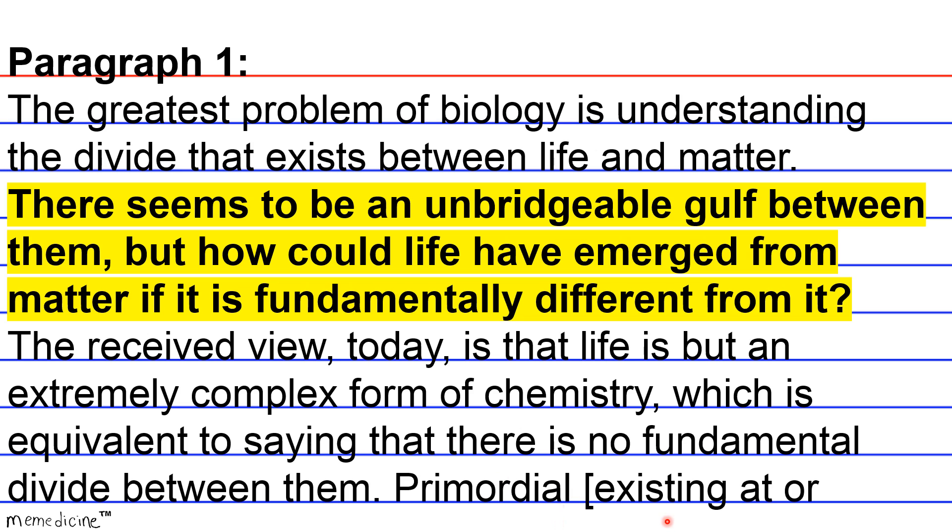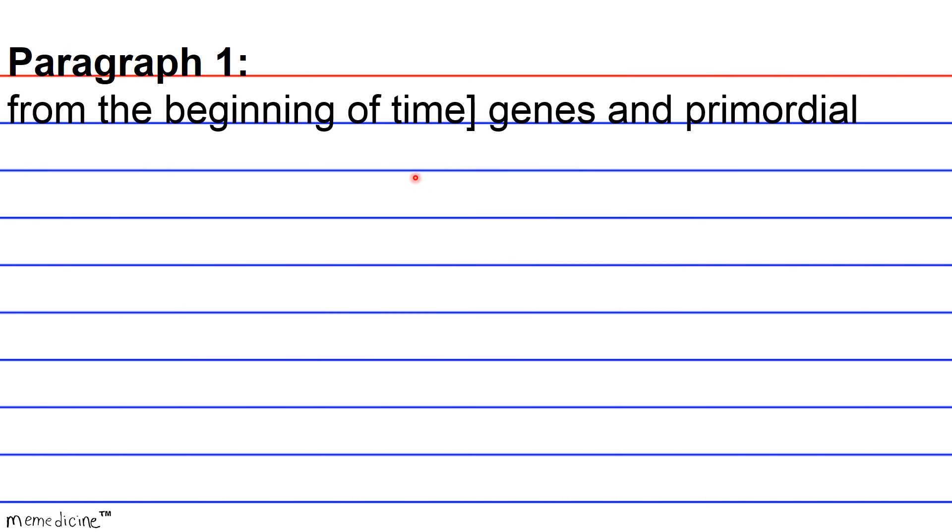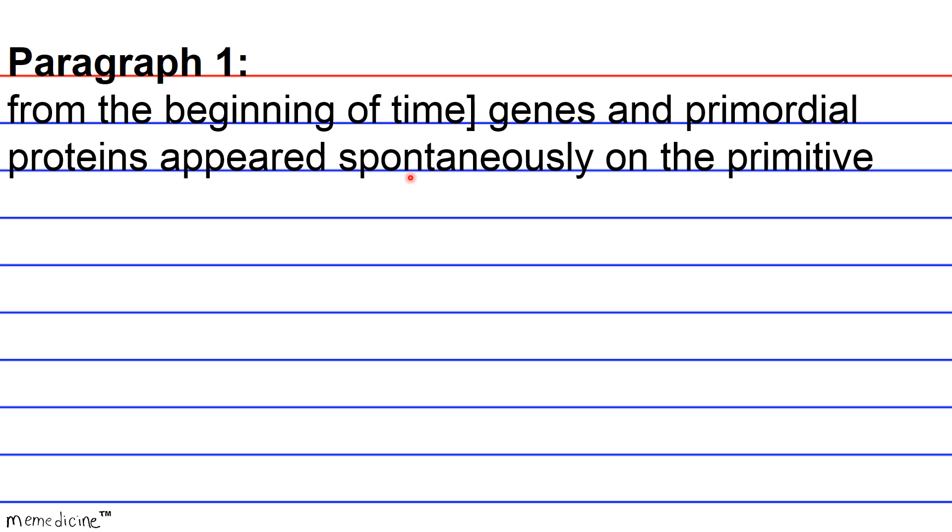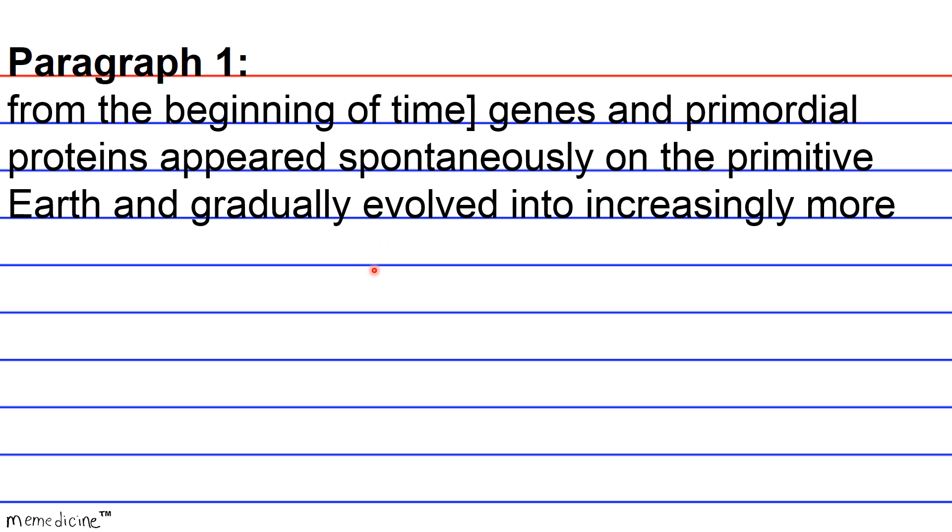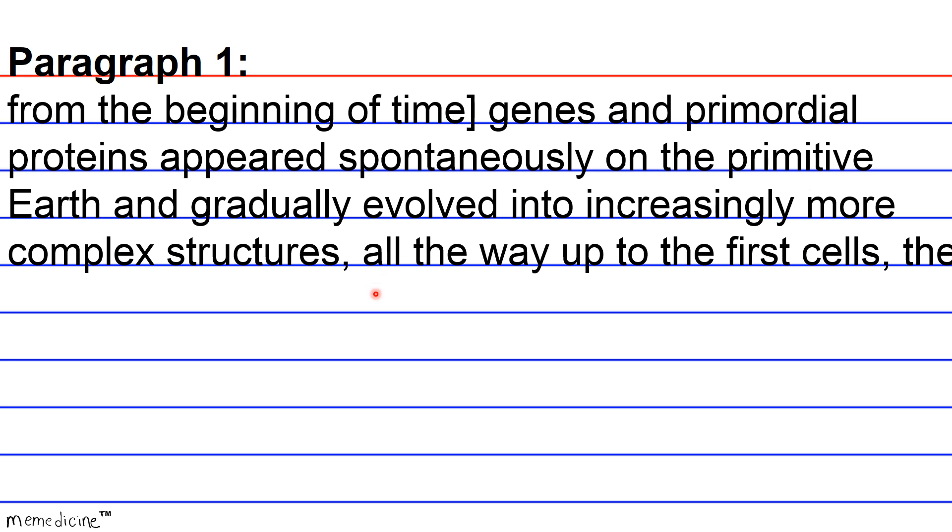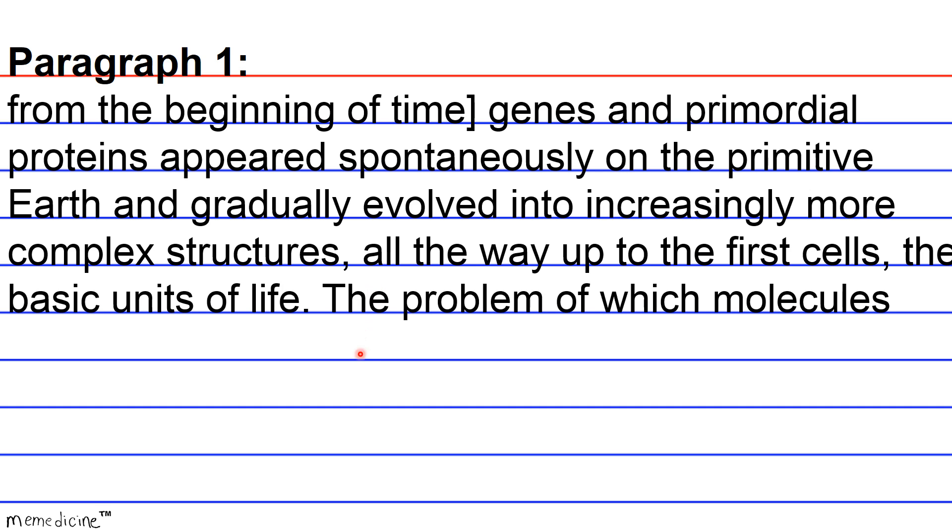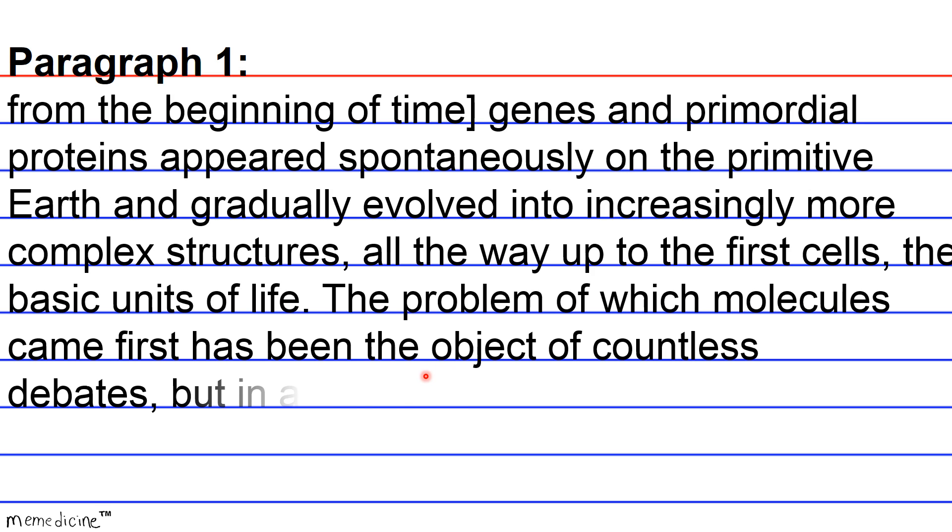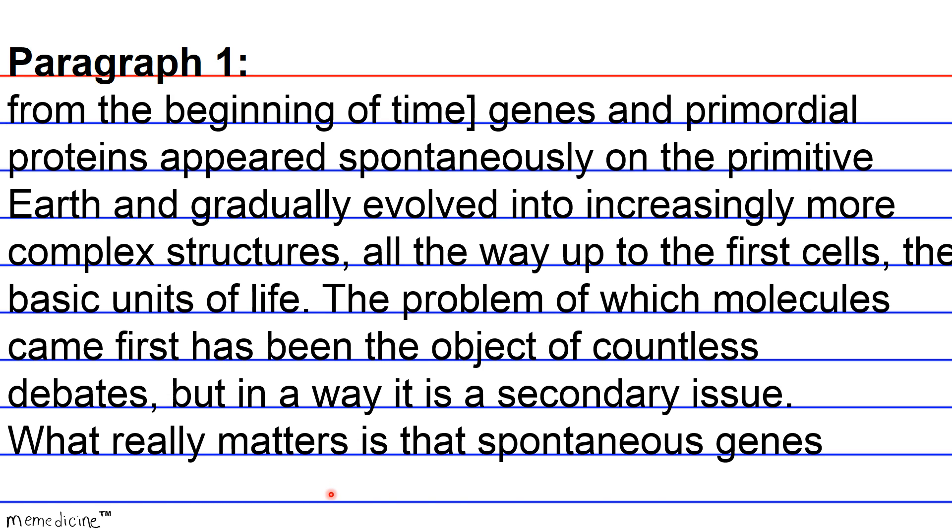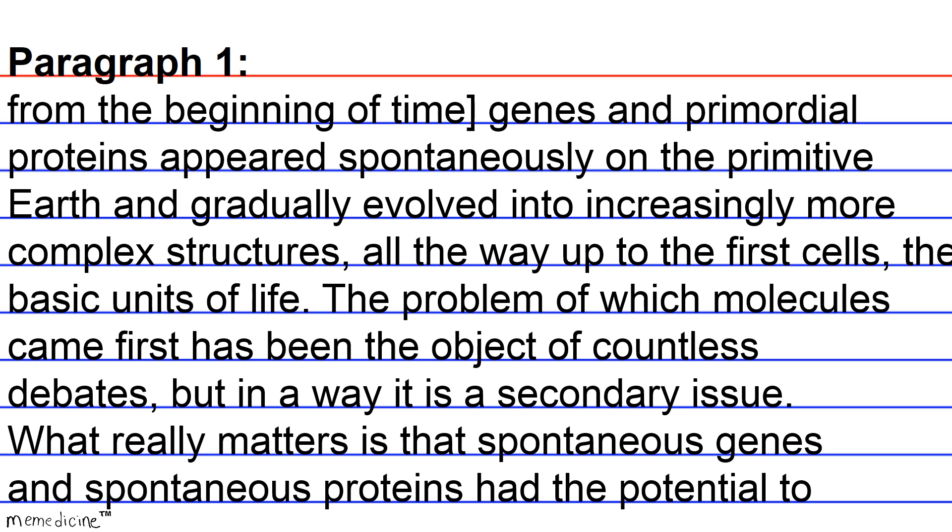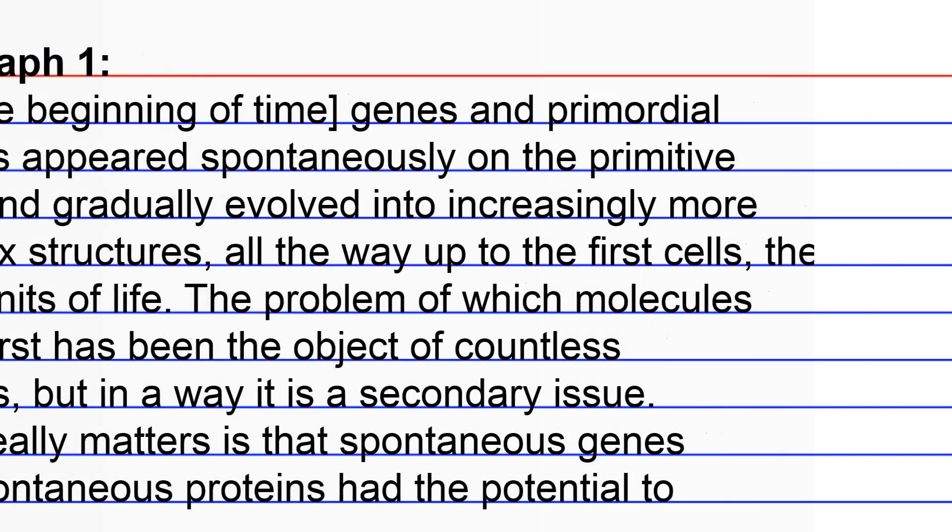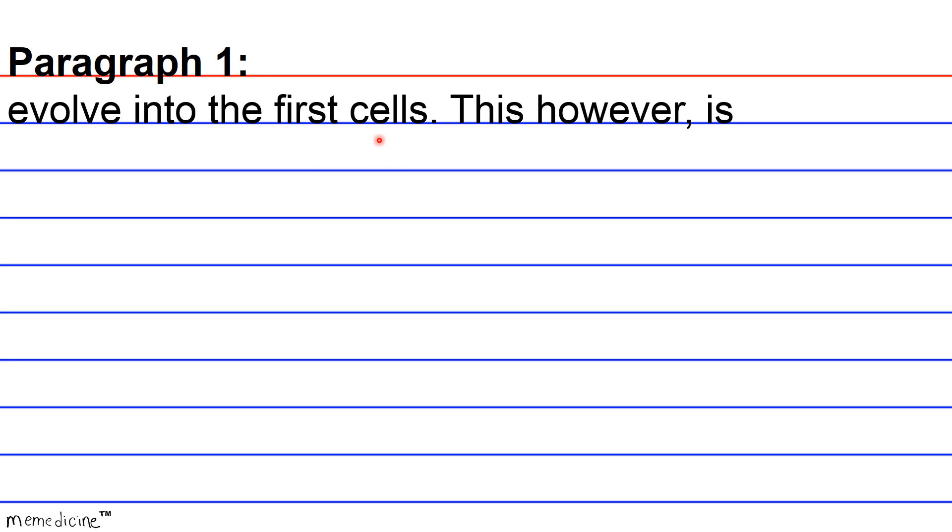Primordial, this word meaning existing at or from the beginning of time, genes and primordial proteins appeared spontaneously on the primitive earth and gradually evolved into increasingly more complex structures, all the way up to the first cells, the basic units of life. The problem of which molecules came first has been the object of countless debates. But in a way, it is a secondary issue. What really matters is that spontaneous genes and spontaneous proteins have the potential to evolve into the first cell.